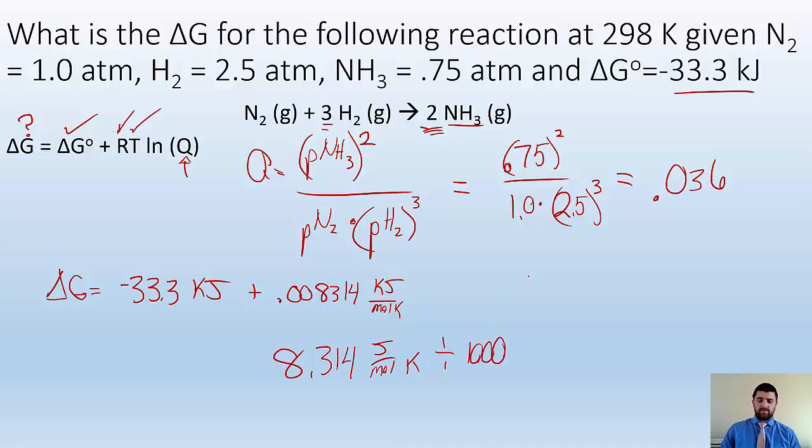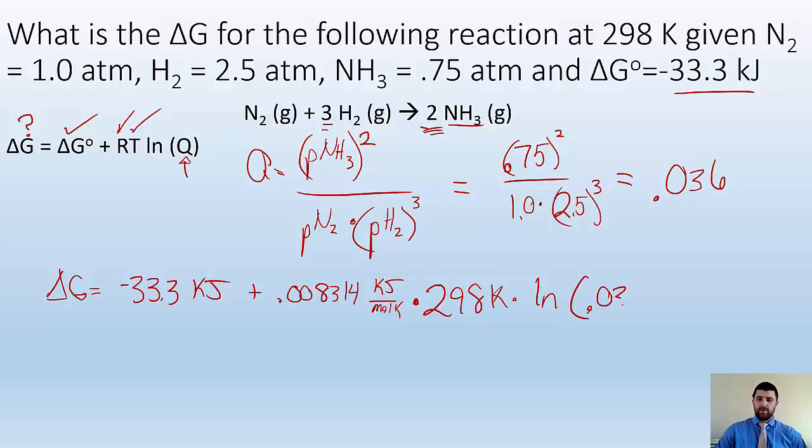So I've got to divide that by 1,000, and I get 0.008314, and then I'm going to have to times that by T, which they tell me is 298 kelvin, so 298 kelvin times ln of that Q, which I figured was 0.036. So now I just plug and chug everything into my calculator and try not to press the wrong buttons, and I have an answer here.